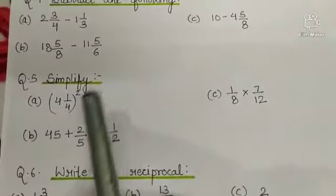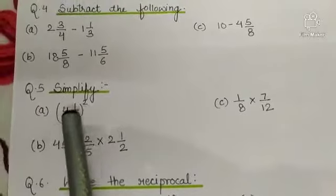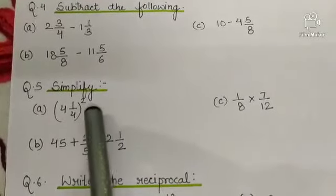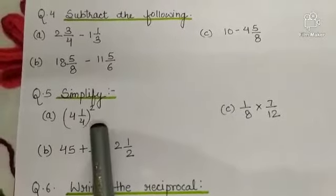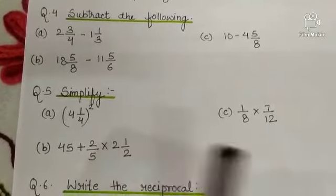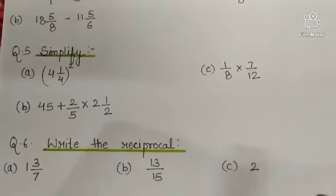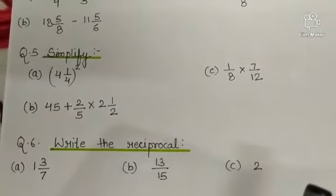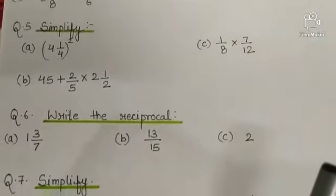Question 5: Simplify. Part A, 4 and 1 by 4 whole power 2. So you know how to do these types of questions. We have already done these types of questions in our classwork. These are of multiplication of fractions, so you know how to do these types of questions.